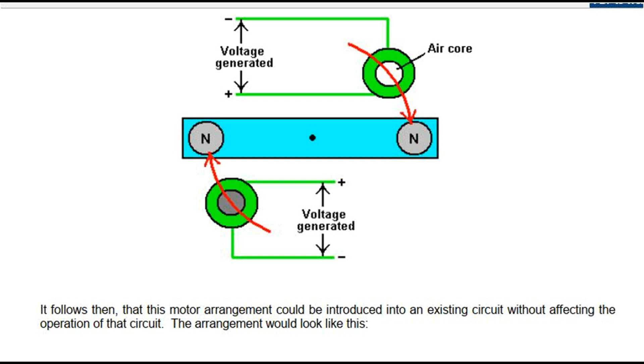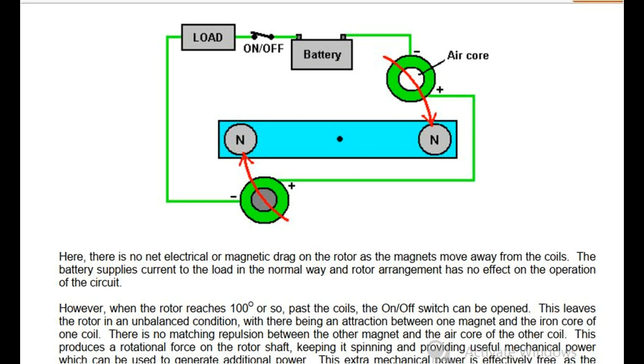The arrangement would look like this. Here, there is no net electrical or magnetic drag on the rotor as the magnets move away from the coils. The battery supplies current to the load in the normal way and rotor arrangement has no effect on the operation of the circuit.